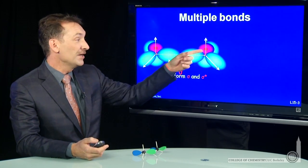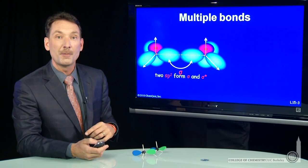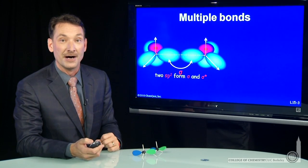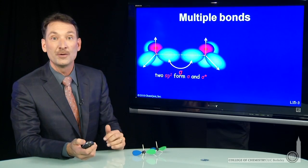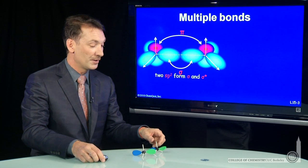Now, the p orbital left over can overlap to form a pi bond, a second bond. And remember, pi bonds are bonds that are above and below the internuclear axis, usually formed by p orbitals.